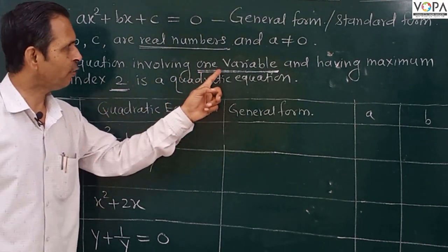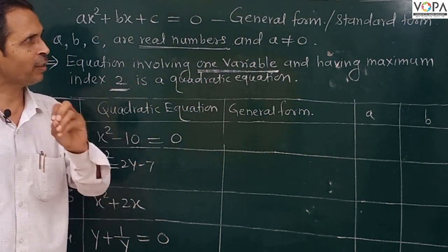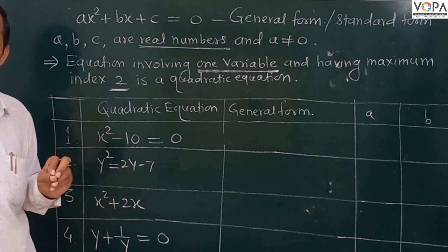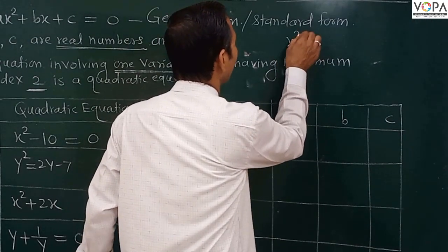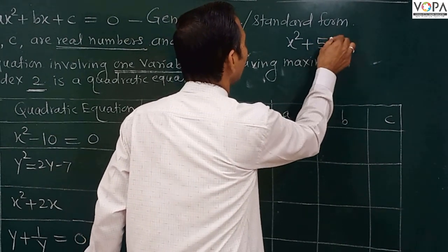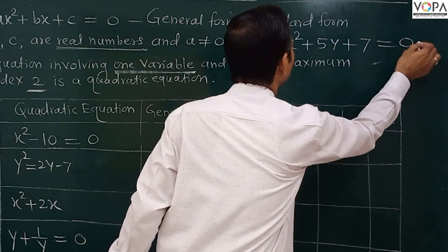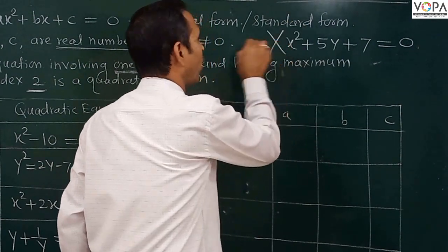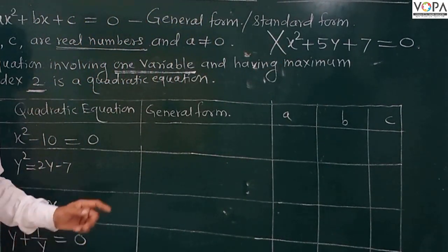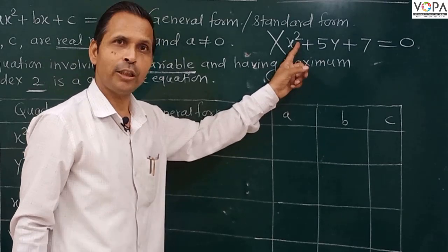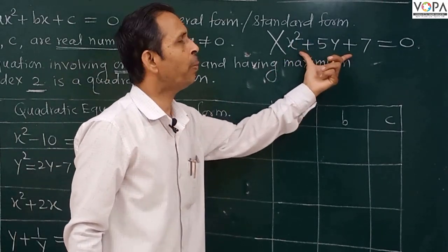The second criterion is that there must be only one variable. For example, x² + 5y + 7 = 0 — this is NOT a quadratic equation. The index is 2 and the maximum index is 2, but it is not a polynomial in one variable.